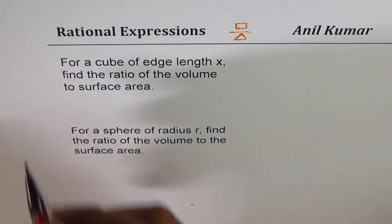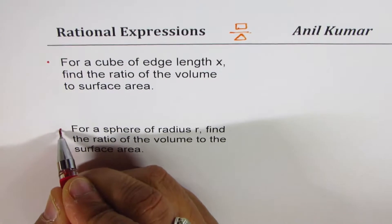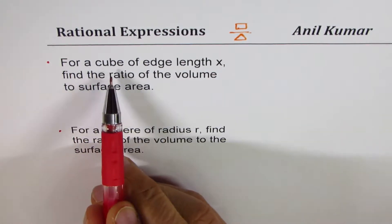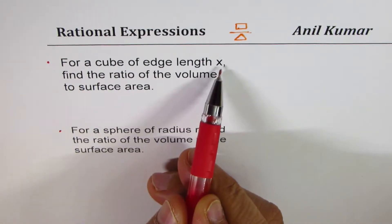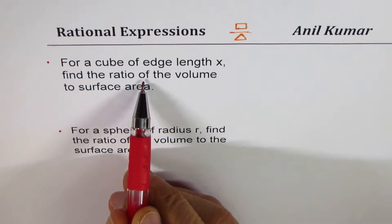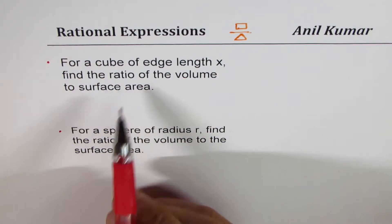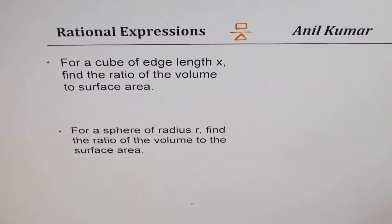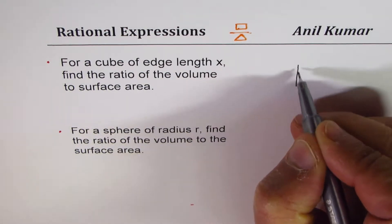Now there are two questions related. The first one here is: for a cube of edge length x, find the ratio of the volume to surface area. So let's sketch a cube. We can sketch a cube like this.